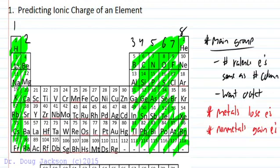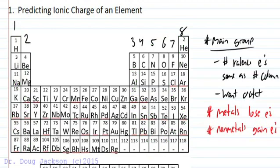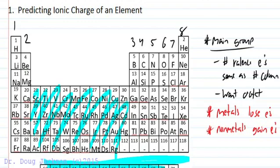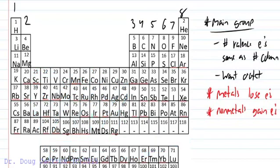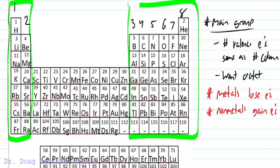If we ignore the area of transition metals and the F block, which is down below — a little harder to see — we can't predict the charges on those elements. So we're going to ignore those for this discussion and only look at our main group elements.